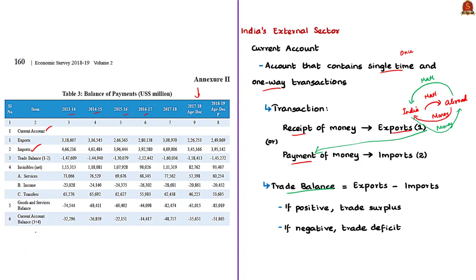In this table, trade balance is given as 1 minus 2, where 1 means exports and 2 is imports. The trade balance or balance of trade refers to the difference between export receipts and import payments — simply exports minus imports. For a healthy economy, the trade balance has to be positive, which is a trade surplus scenario. Trade surplus is possible only when exports are more than imports. But if imports exceed exports, it becomes trade deficit, indicating that production is not happening adequately and we are depending more on foreign nations.